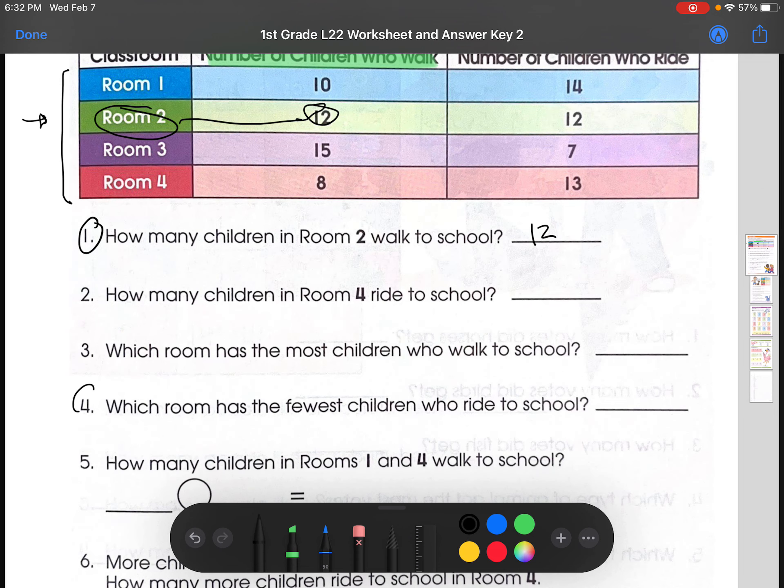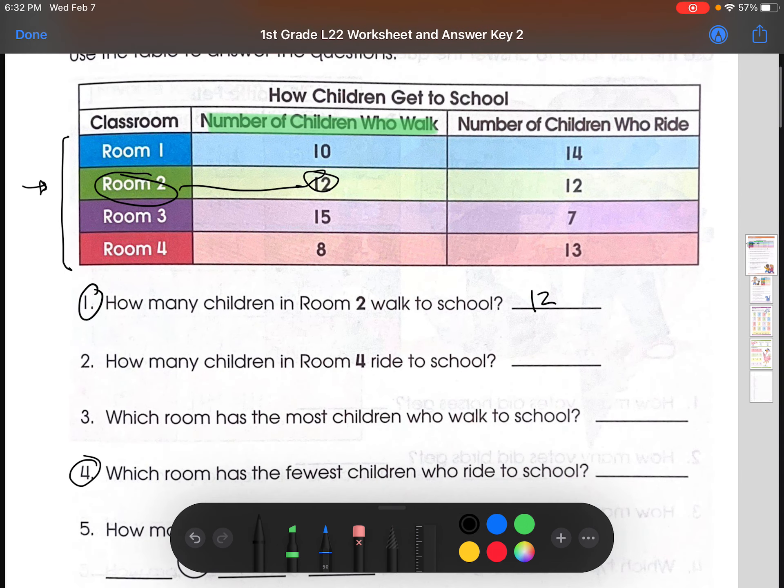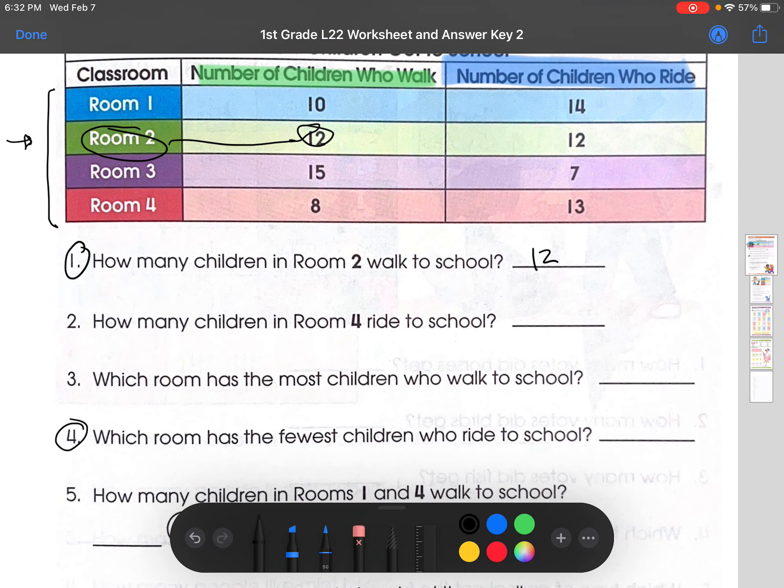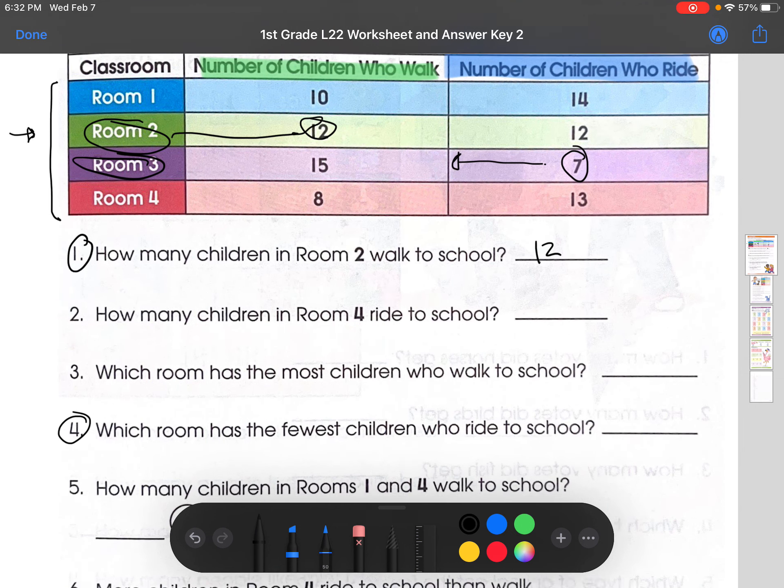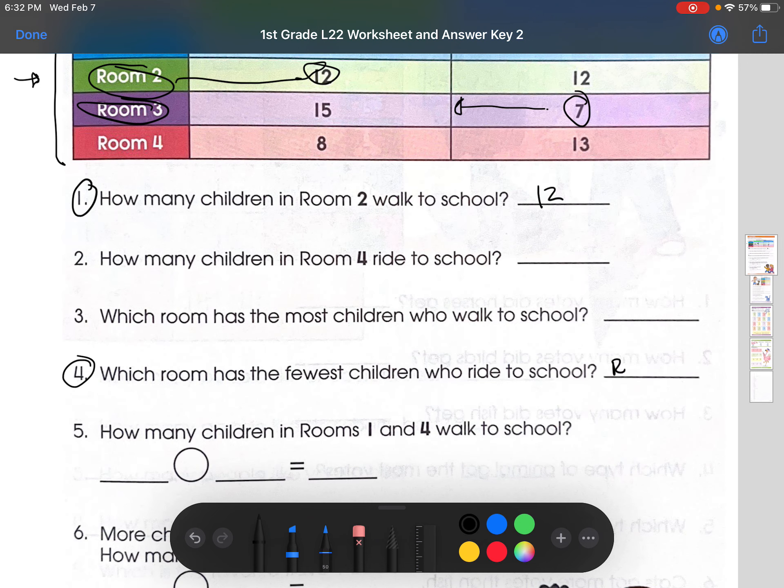Number 4. Which room has the fewest children who ride to school? So first we'll go to the number of children who ride to school. And then we look for the smallest number out of these 4 and that is obviously 7. So if we look, that is room 3. So the answer to number 4 is room 3.